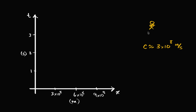Let's think about my position over time in my frame of reference. So at time equals zero, my x position is zero — I consider myself to be stationary. After one second, my position is still zero. After two seconds, my position is still x equals zero. After three seconds, my position is still x equals zero.